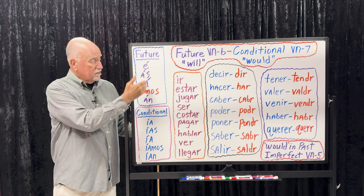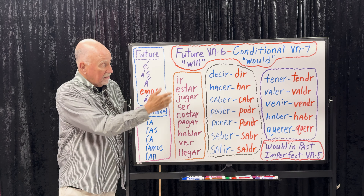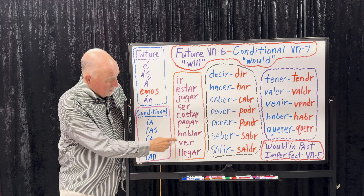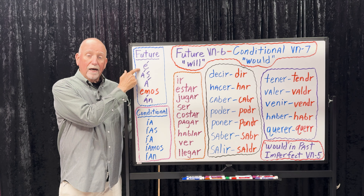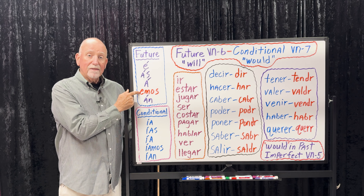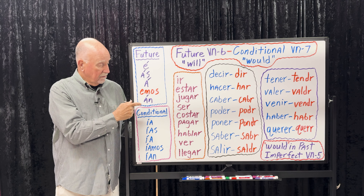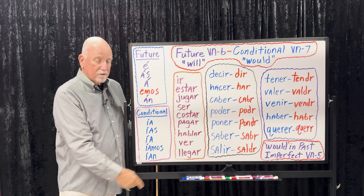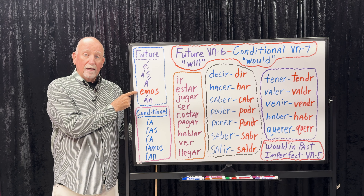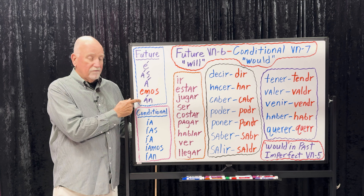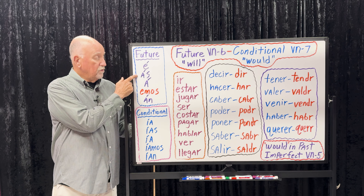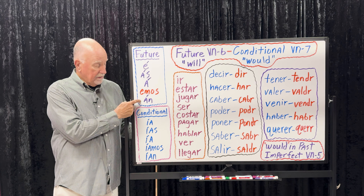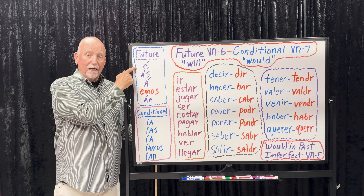See how easy the future is? The endings are the same for AR, ER, and IR verbs. About 95% of all verbs in Spanish are AR verbs. Hablar: 'I'll talk with him tomorrow' — hablaré con él mañana. 'We'll talk about that tonight' — hablaremos de eso esta noche. 'Will you talk with her, please?' — ¿hablarás con ella, por favor? Ver — to watch or to see: 'We'll watch a movie' — veremos una película. 'They will watch the fight' — verán la pelea. Llegar: 'They will arrive late' — llegarán tarde. 'I will arrive early' — llegaré temprano.